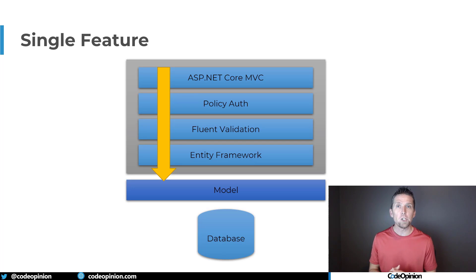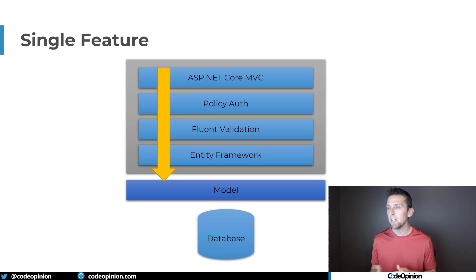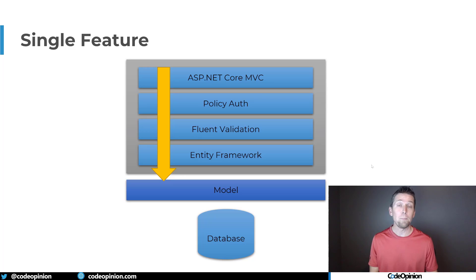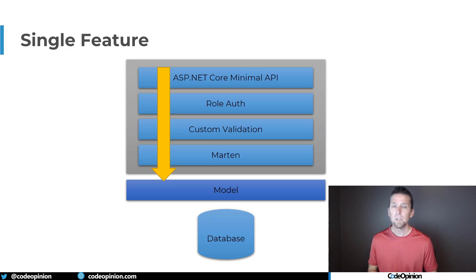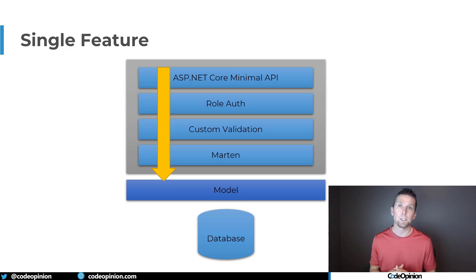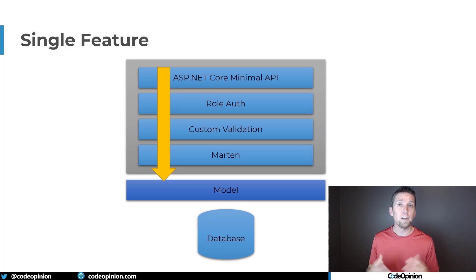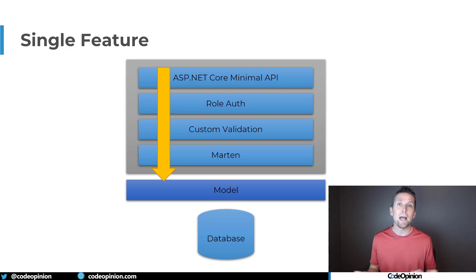Maybe one feature uses ASP.NET Core MVC, policy-driven authorization, Fluent Validation, and Entity Framework as an ORM persisting to a database. Separately, in a completely different feature set, maybe we're using minimal APIs, role-based authorization, custom validation, and Marten as a document database with Postgres. You can now decide to localize per individual feature or feature set how you want to implement layers or separation of concerns — and whether you need to at all.